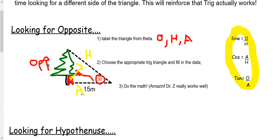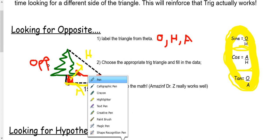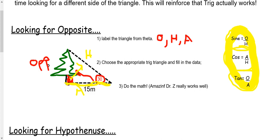The definition of adjacent is the side that connects theta and the right angle. Now, we have to pick one of these three trig ratios. What do we know about this triangle? We know that we have an adjacent side, and we're looking for the opposite side. We need a trig ratio that has adjacent and opposite. Sine has opposite and hypotenuse — that won't work. Cosine has adjacent and hypotenuse — we don't need hypotenuse. So tangent has opposite and adjacent.